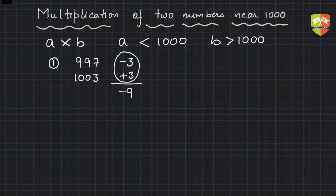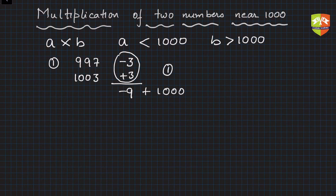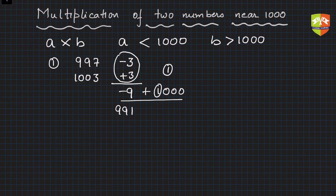Like what we did in the hundreds case, we can't have a negative number in the product of two positive numbers. So in this case we simply add one thousand to it, and write the number 1 here — because you are adding only one thousand. Just write that 1 separately for now. Then perform this: it is 991 very easily. When you are doing the calculations you don't need to write anything — you can do it mentally.